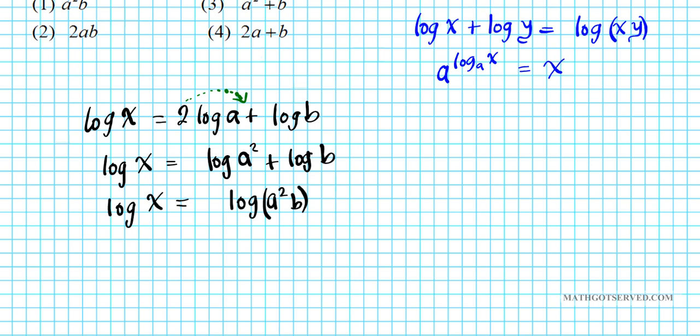Alright, so now let's eliminate the logs. Because the base here is ten, so using the inverse property of logarithms, I can exponentiate both sides using ten as my basis of exponentiation. 10 to the log base ten of x equals 10 to the log base ten of a squared times b. So I basically exponentiate both sides using ten.